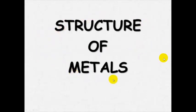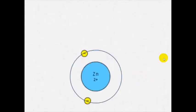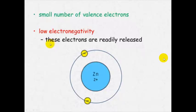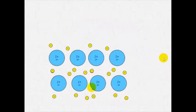So what I want to do now is have a look at the structure of metals and metallic bonding. And this is going to explain the properties that we've just spoken about. So when we think about a metal atom it will have a small number of valence electrons, only one, two or three electrons in its outside shell. And it's also got low electronegativity. In other words these electrons here are easily removed from the atom. It wants to get rid of those electrons.